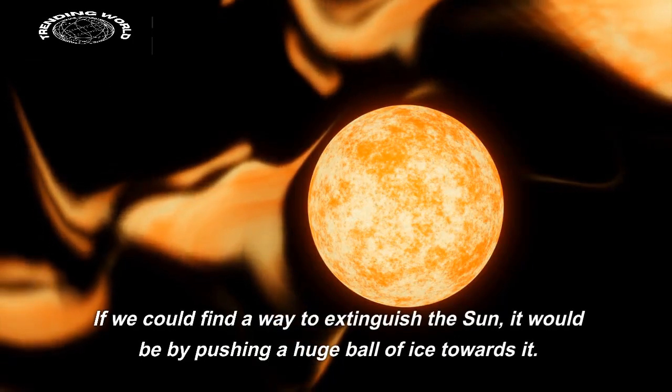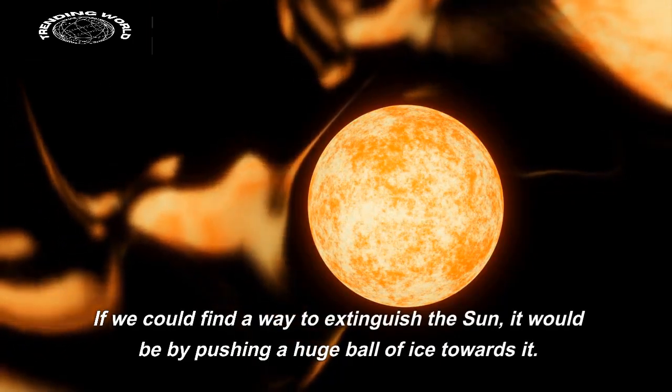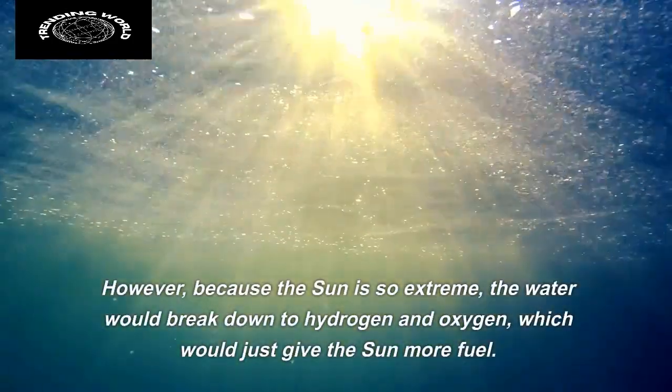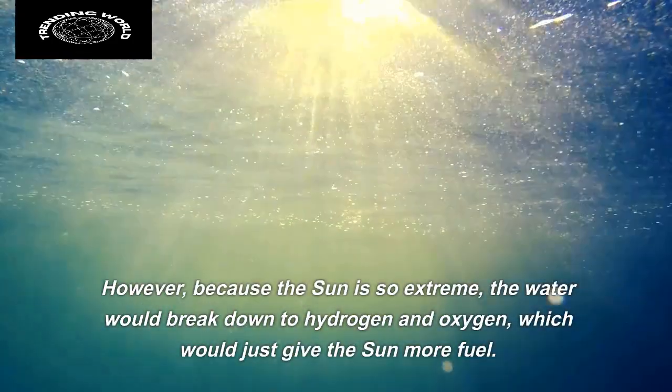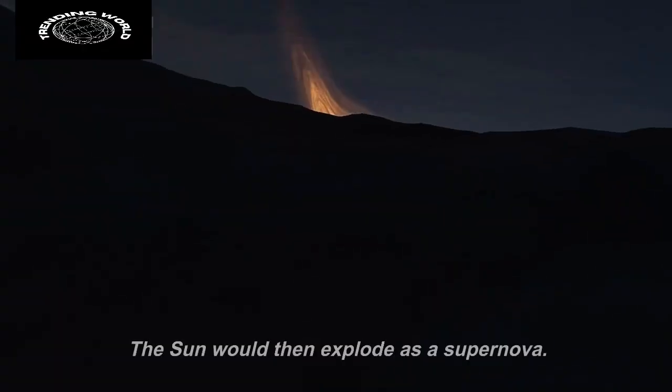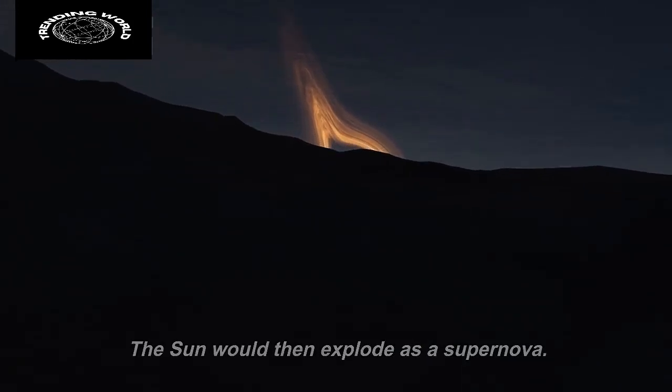If we could find a way to extinguish the sun, it would be by pushing a huge ball of ice towards it. However, because the sun is so extreme, the water would break down to hydrogen and oxygen, which would just give the sun more fuel. The sun would then explode as a supernova.